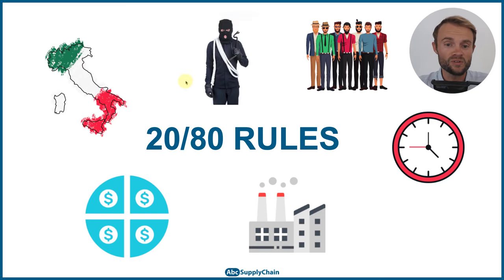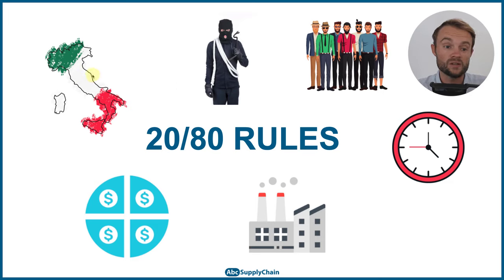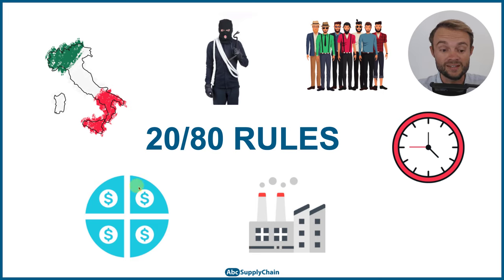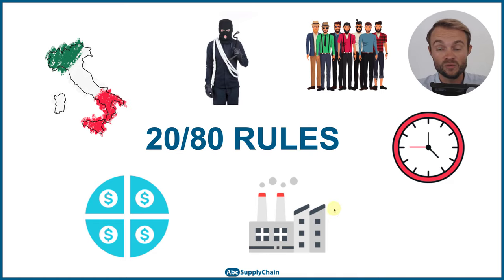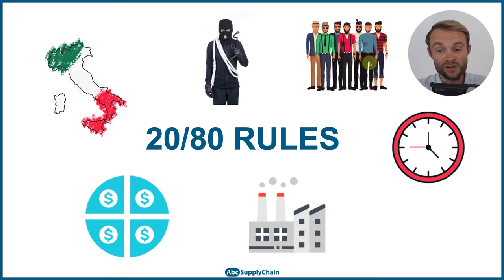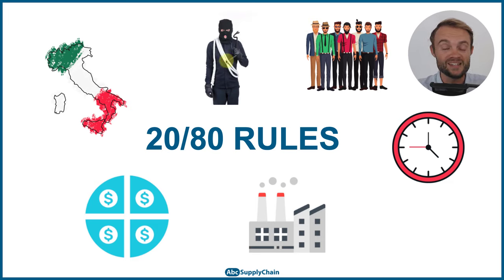You can apply this rule for basically almost everything in your life. The first observation was with Vilfredo Pareto in Italy — he observed that 80% of the land was owned by 20% of the population. You can also apply it to your sales: 80% of your sales come from 20% of your customers, 80% of your purchases from 20% of your suppliers, and even 80% of crimes are committed by 20% of criminals.